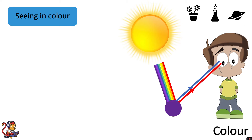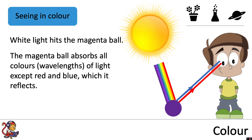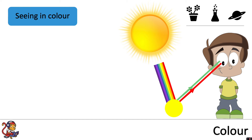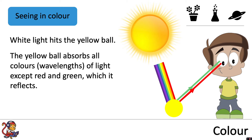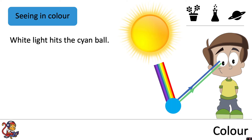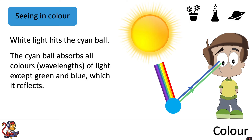Looking at the balls as secondary colours: white light hits the magenta ball and the magenta ball absorbs all colours of light except red and blue, which it reflects. As red and blue enter your eye, you will see that ball as magenta. For a yellow ball, the yellow ball absorbs all colours of light except red and green, which it reflects, and you would interpret that as yellow. For the cyan ball, the cyan ball absorbs all colours of light except green and blue, which it reflects.